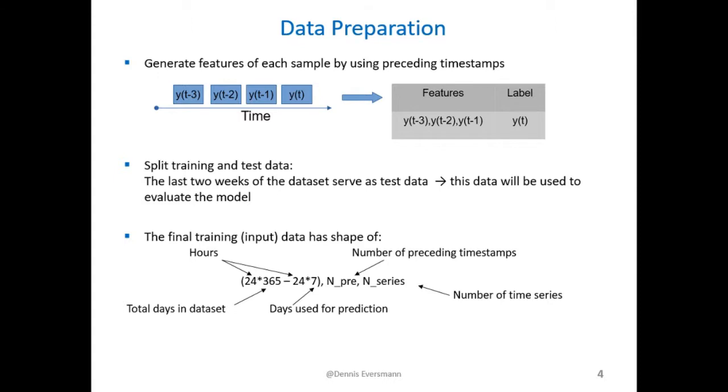Finally the shape of the input data is as follows. First we just multiply the hours by the days in the data set minus the test data set. And the second dimension is given by the preceding timestamps used as a feature space. And the third dimension is given as the number of time series taken into account in the analysis.